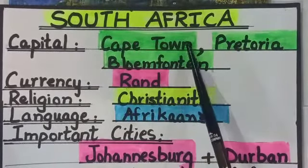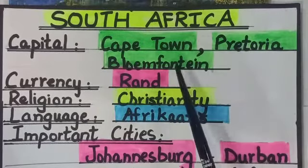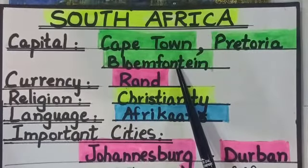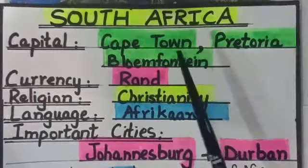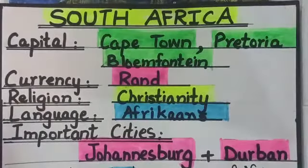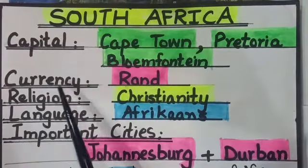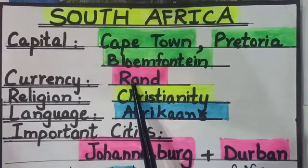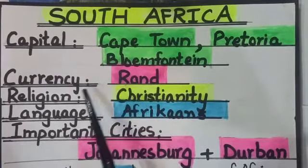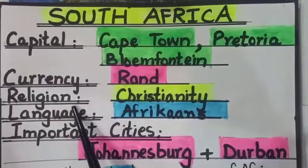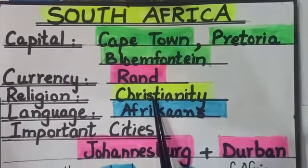Cape Town, Pretoria, Bloemfontein. Do you know what is meant by Cape Town? A cape is the end of a country or continent that extends into an ocean, a lake, or a river. The currency of South Africa is Rand. Rand is the currency of South Africa.